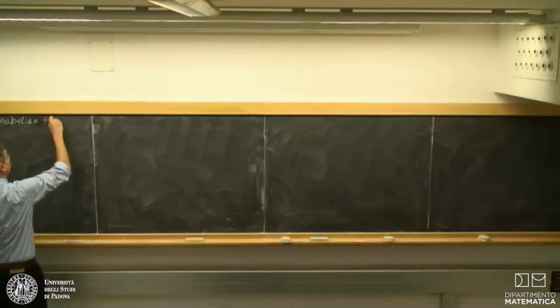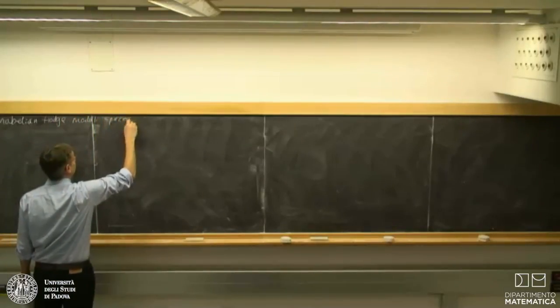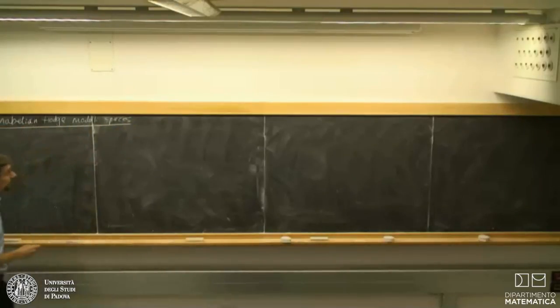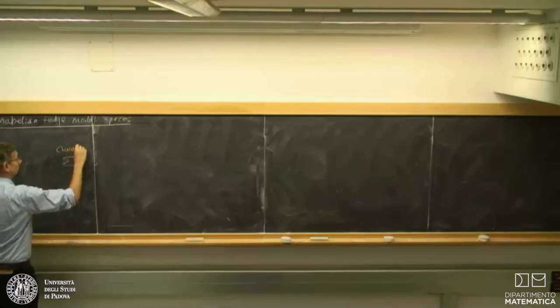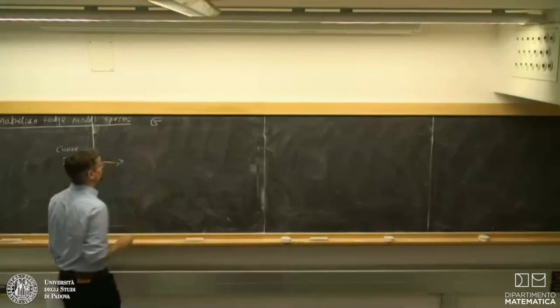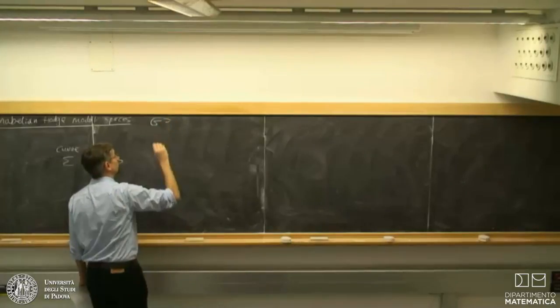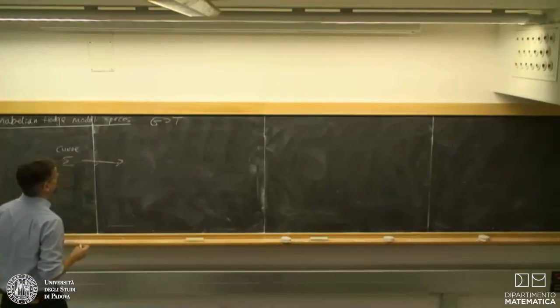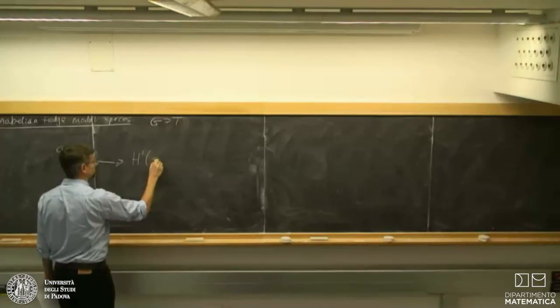Let me start by sketching the non-Abelian Hodge moduli spaces. The simplest case is to take a smooth compact algebraic curve sigma. We fix a connected complex reductive group G and a maximal torus, and attach to our curve H^1(sigma, G). There are various different ways to think about what this cohomology set is.